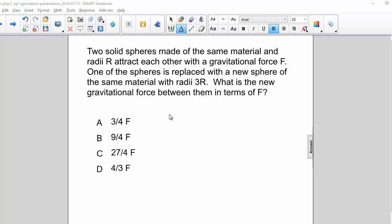Two solid spheres made of the same material and radii r attract each other with a gravitational force F. One of the spheres is replaced with a new sphere of the same material with radii 3r.